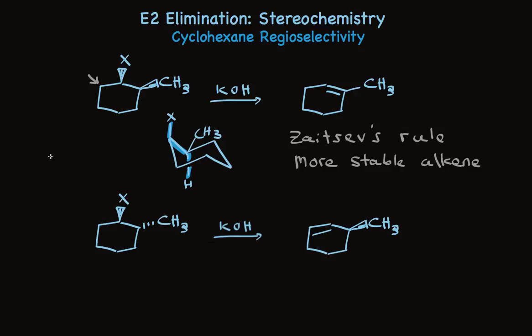In this other chair, where we need to have the hydrogen, we have the methyl group instead. The methyl is anti-coplanar to the halide. This 1,2 elimination reaction to make the more stable alkene cannot take place.